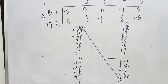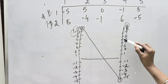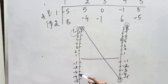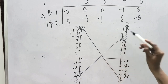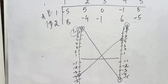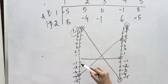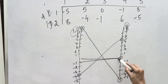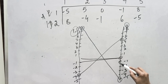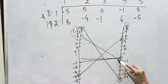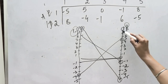Plot the points for each payoff line. The second line: positive five on the p₁ axis and minus four on the (1 − p₁) axis — join these points. The third line: zero on p₁ and minus one on (1 − p₁) — join these points. The fourth line: minus one and six — join these. The fifth line: eight and minus five — join these points.